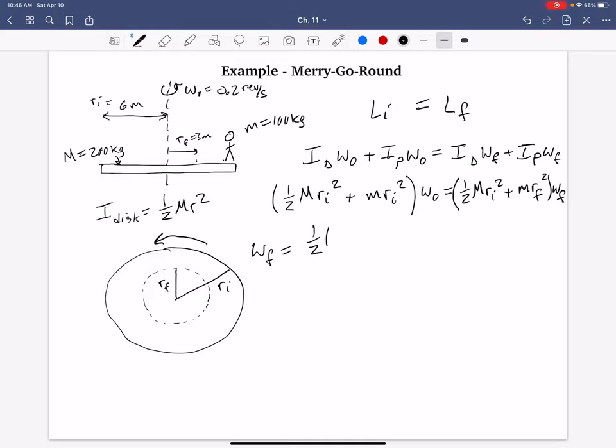And so I'm going to plug in some numbers now. So we have one half times the mass of the capital M, the mass of the carousel, 200. The radius of the carousel, which is 6 meters squared, so that's 36. Plus this term now, the mass of the person, which I said was 100, times 36. All of that times the initial omega naught, which was the 0.2.